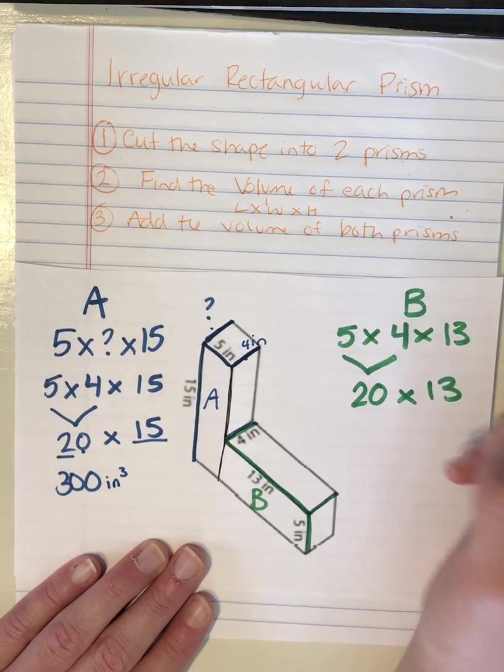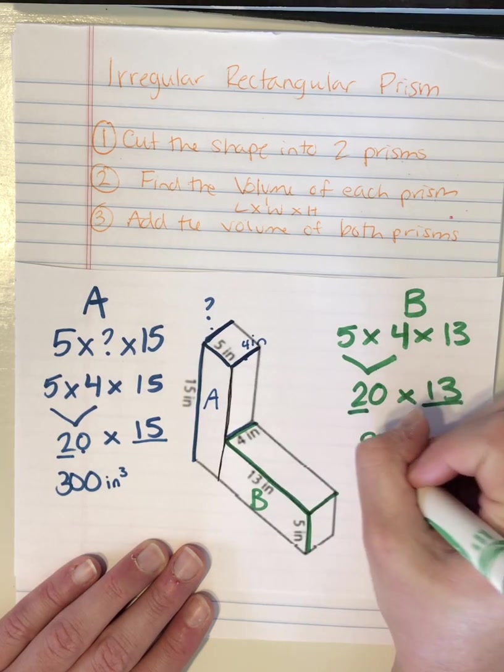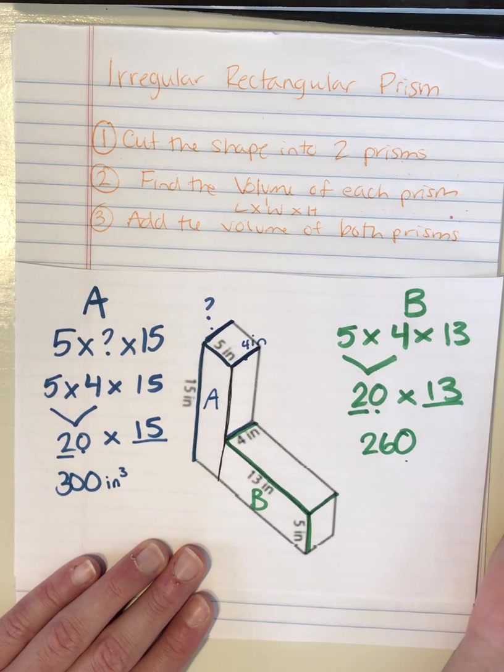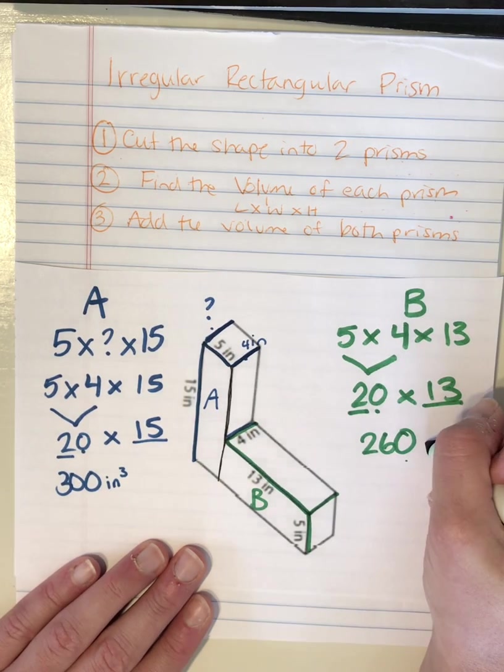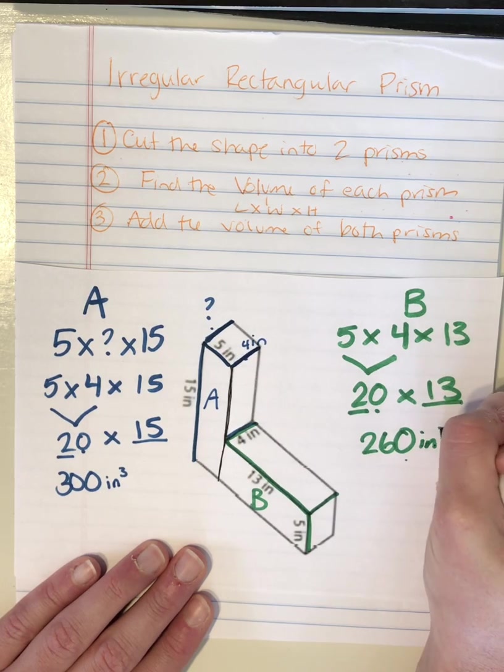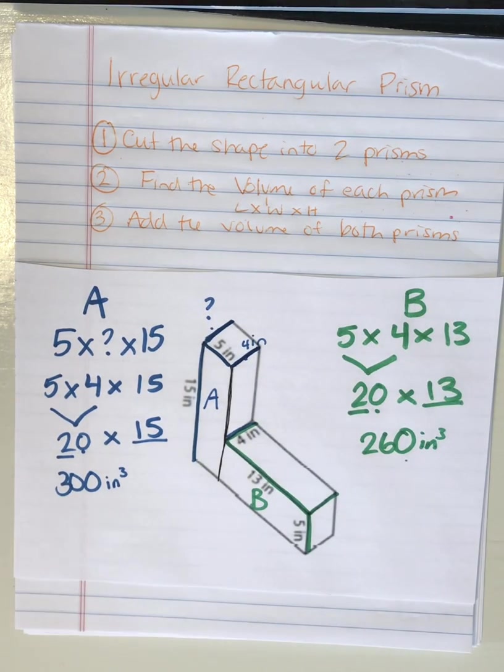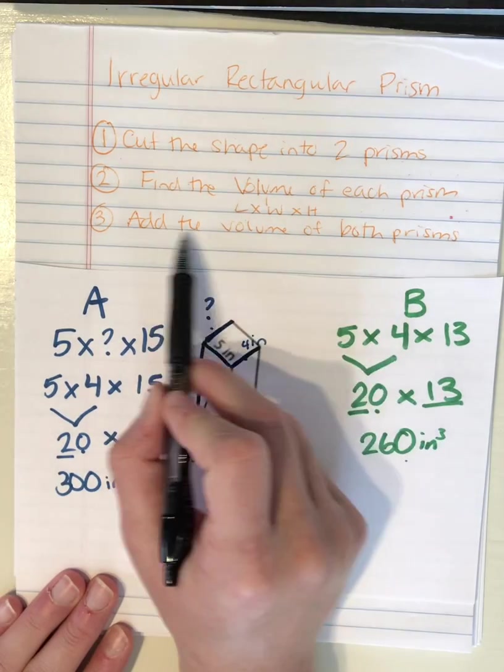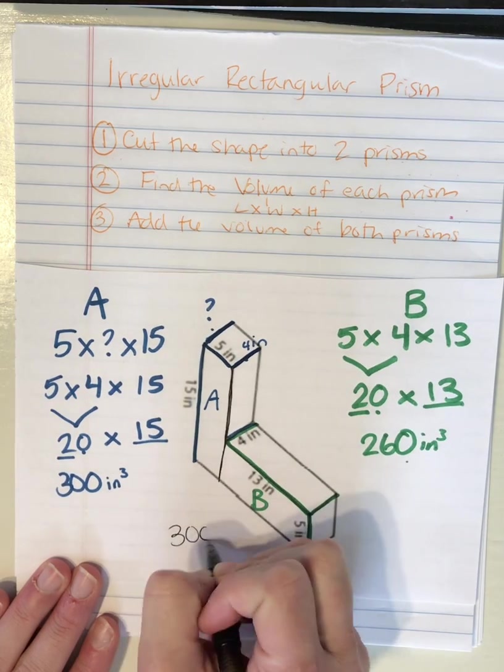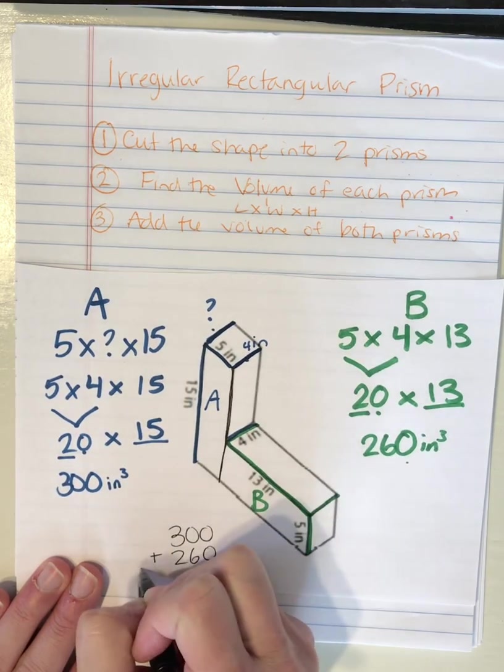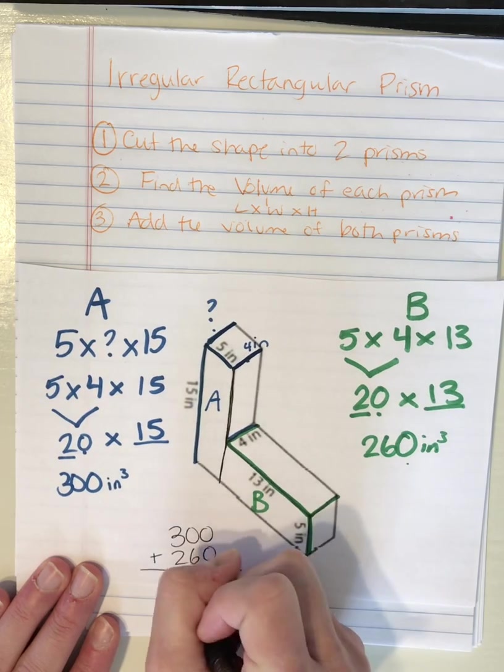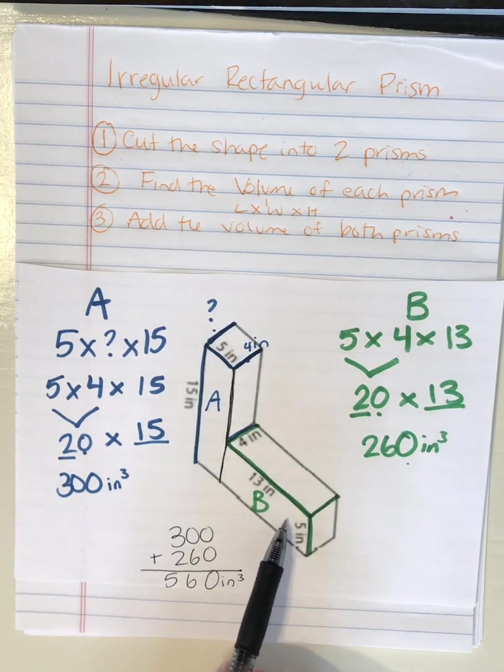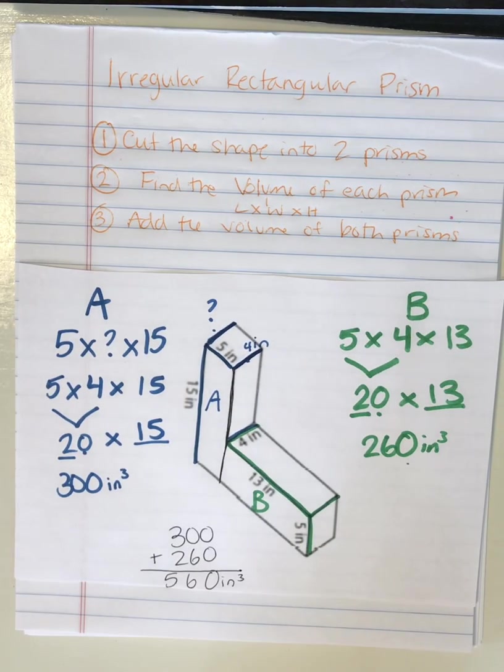20 times 13. I'm gonna use the same strategy I used over here. 13 times 2 is 26. So 13 times 20 is 260. Since it's volume we're working with cubic inches. So now I'm gonna move on to step 3. And step 3 tells me to add the volume of both prisms. So 300 plus 260 equals 560 cubic inches. That is the volume of this irregular rectangular prism.